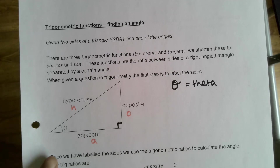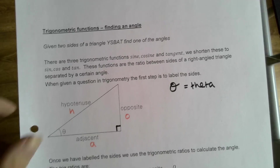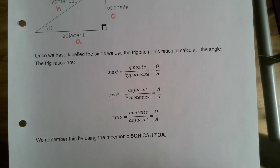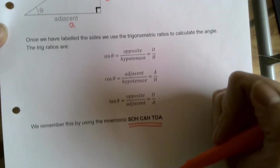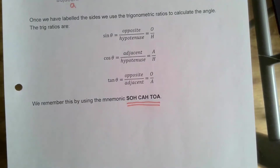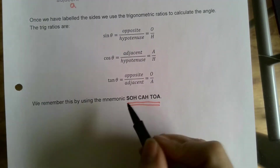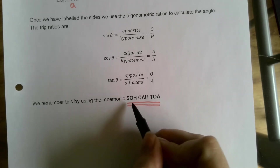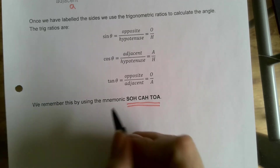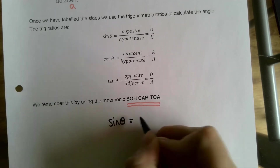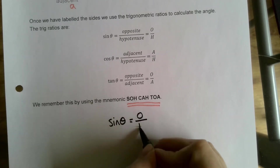Once we've got the sides labeled, there are ratios we need to learn. You may have heard of SOH-CAH-TOA - that's the way we remember all the rules. SOH is the first part: it helps us remember that sine theta equals the opposite over the hypotenuse.